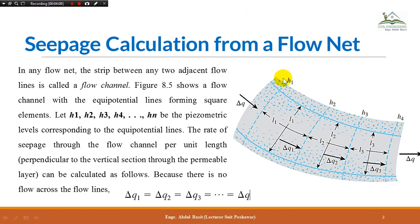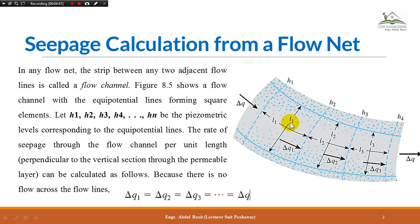At the first equipotential line the potential head equals h1, and at each successive equipotential line the potential head drops to a lesser value. The difference between h1 and h2 is the first potential drop, h2 and h3 is the second potential drop, and so on. Since the element is assumed completely square, the length and width are equal. Now let's take the discharge phenomenon through this flow channel.